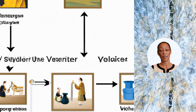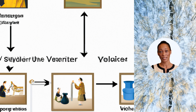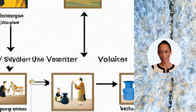Finally, let's talk about the integration of system archetypes with other systems thinking tools. By combining system archetypes with tools like stock and flow diagrams and causal loop diagrams, we can get a more complete understanding of complex systems. It's like having a toolbox — each tool is useful on its own, but when used together, they can do even more.